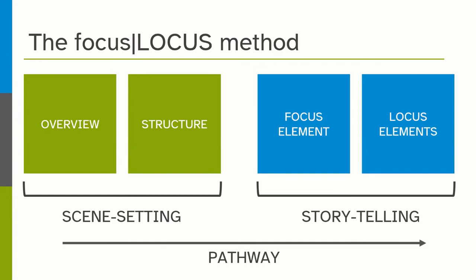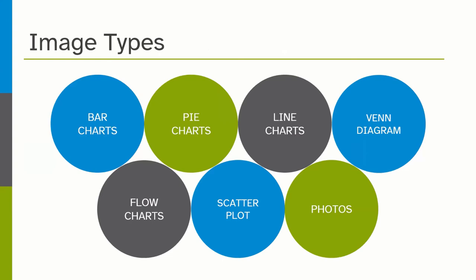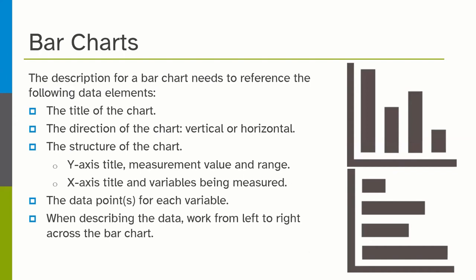We like to talk about this in terms of scene setting and storytelling. You're creating an overview — that first sentence, which is generally your alt text. In the longer description, you're building up the structure of that image so someone can visualize it. You're setting up the theme, then telling the story about that image going from the general to the specific through the details, creating a pathway through the image. The image types we're going to talk about today are bar charts, pie charts, line charts, Venn diagrams, flow charts, scatter plots, and photographs.